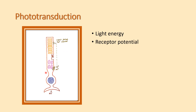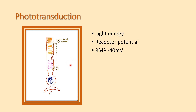The resting membrane potential of the visual receptor, such as the rod, is minus 40 millivolts. During the resting state in the dark, sodium is pumped out from the inner segment of the rod to the extracellular fluid through the sodium-potassium pump. This sodium enters back into the outer segment of the rod through the cyclic GMP-gated sodium channel. The resting membrane potential for visual receptors is minus 40 millivolts, whereas for other sensory receptors it is minus 70 millivolts.